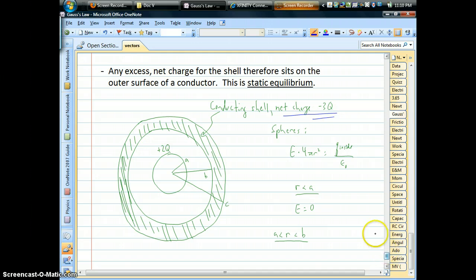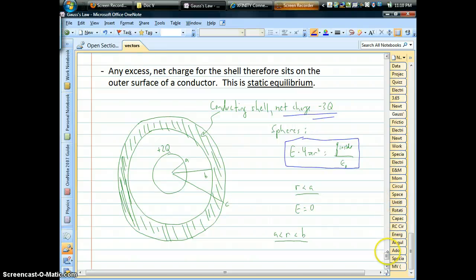With Gauss's Law, which for spheres, the shape that we're dealing with, it has the equal form: electric field times surface area is the charge inside that surface divided by epsilon, our constant.